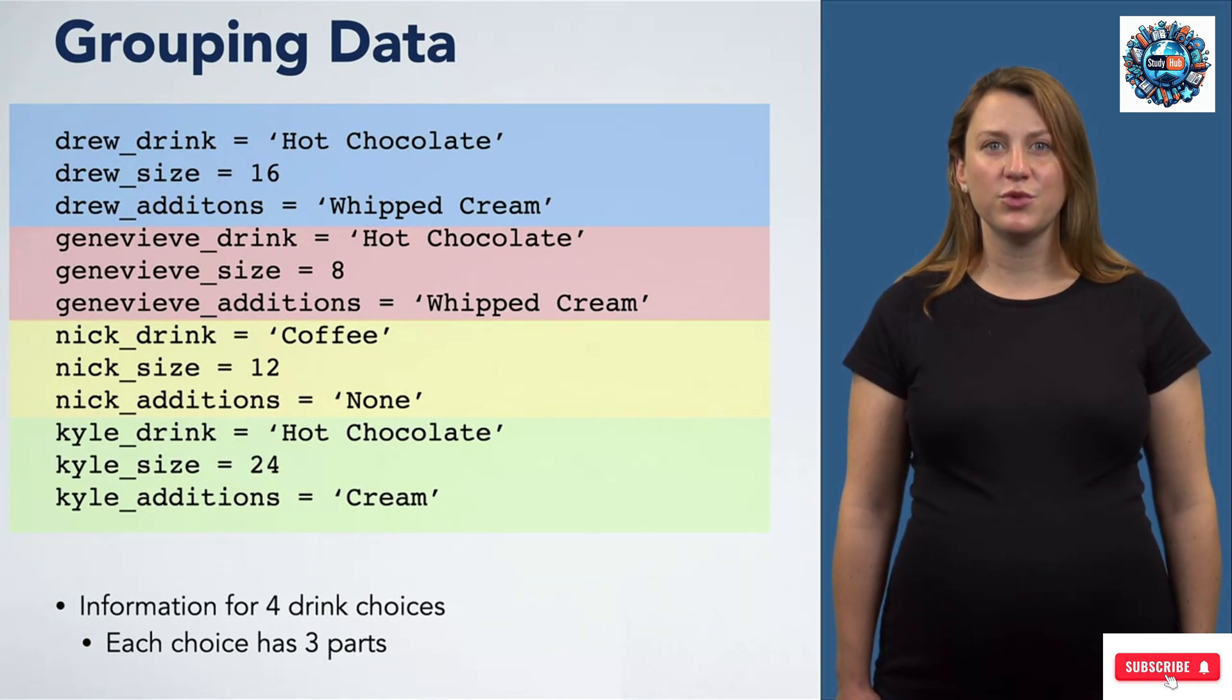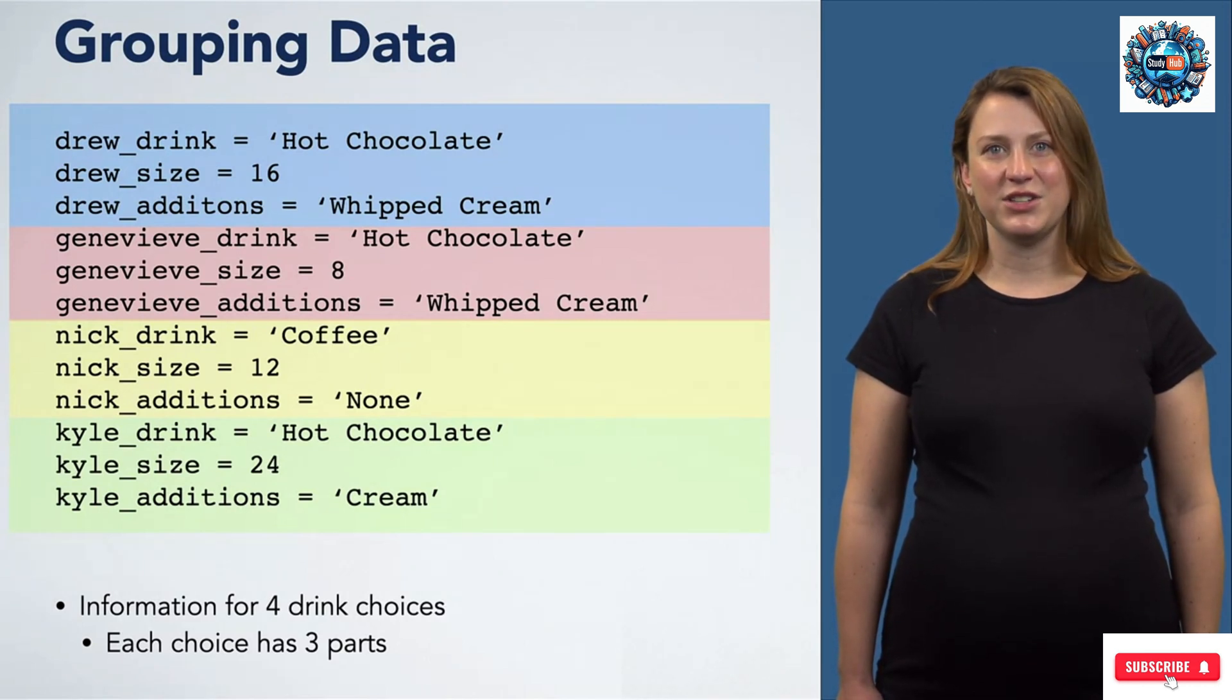In blue, we have Drew's drink choice. The first piece is the type, in this case a hot chocolate. The next piece is the size, in this case 16 ounces. Finally, any additions. In Drew's case, he wants whipped cream. Below it in pink are my choices. I also want a hot chocolate with whipped cream, but in a smaller size of only 8 ounces.